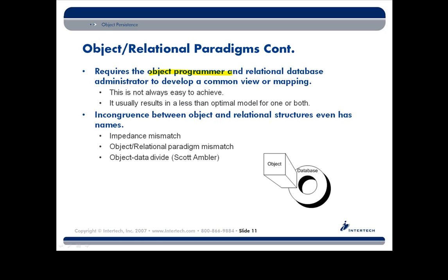It requires object engineers — or object programmers — and relational database engineers, or DBAs, to develop a common view or mapping of the system. First of all, that's not easy to achieve, and secondly, it doesn't always lead to what we call an optimal model for either the object developer or the database administrator. This incongruence has several names: you'll hear about impedance mismatch, or the great divide, or the object-relational paradigm mismatch — all names pointing to the fact that we typically have an issue getting object state and relationship information into our relational databases.